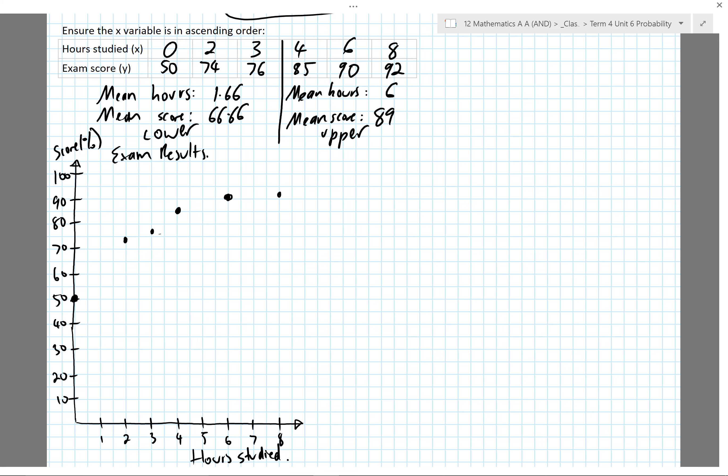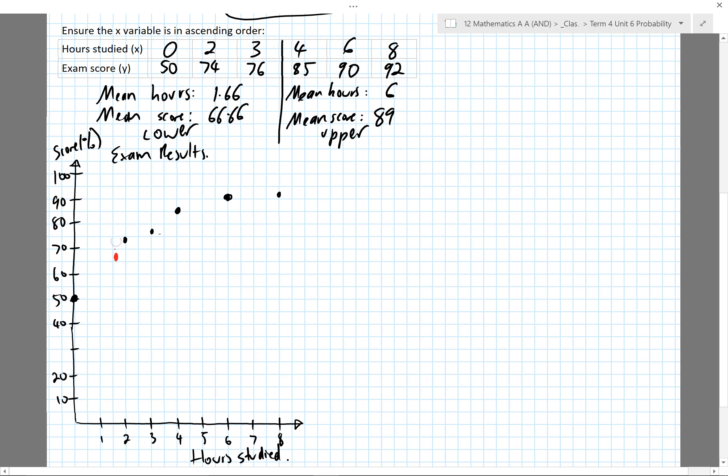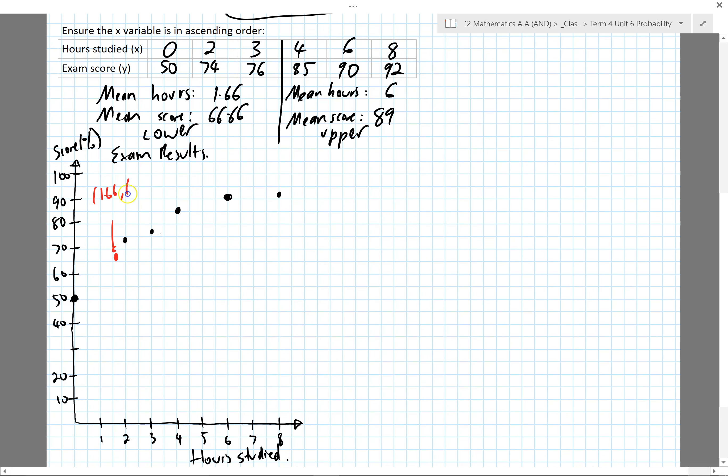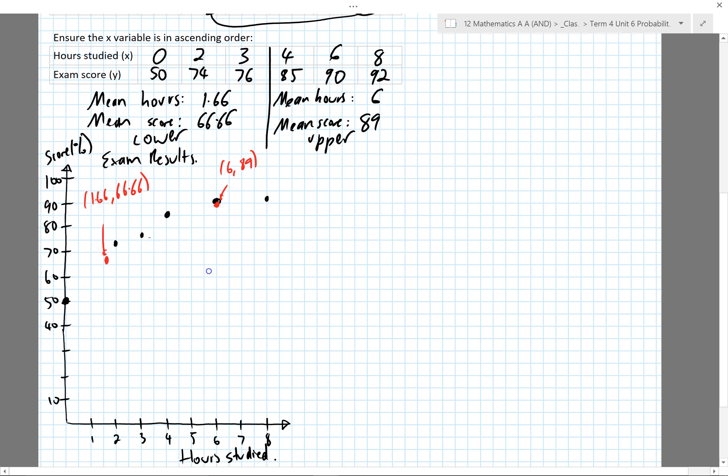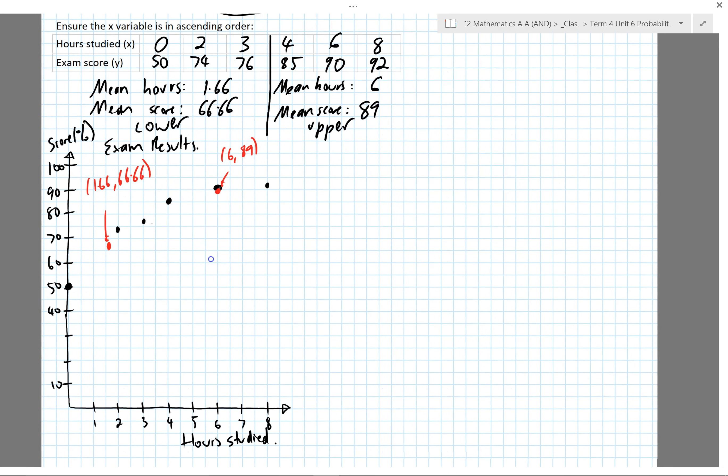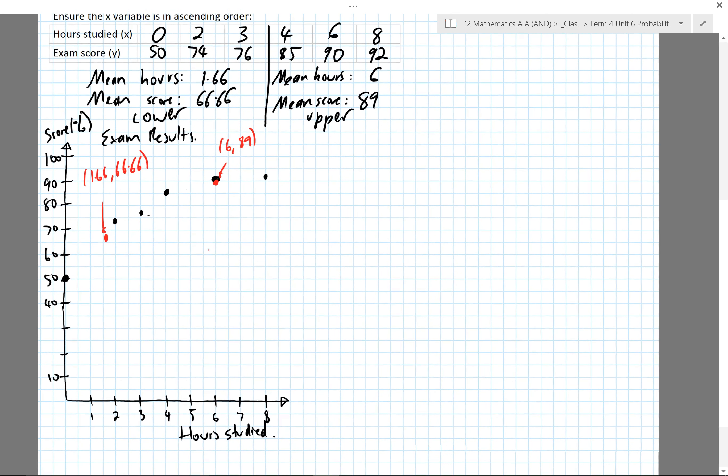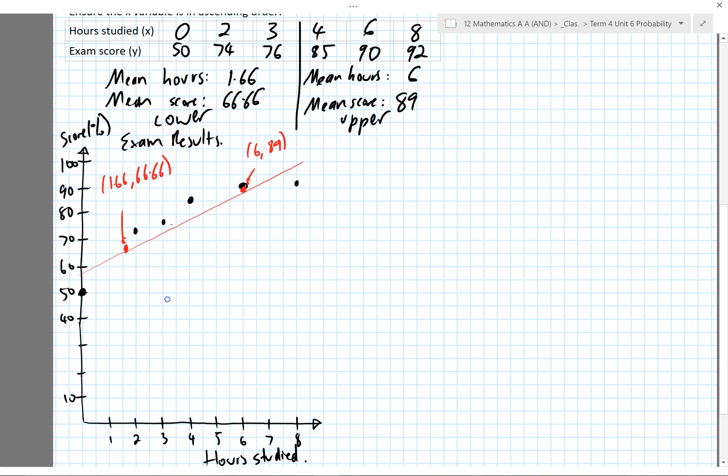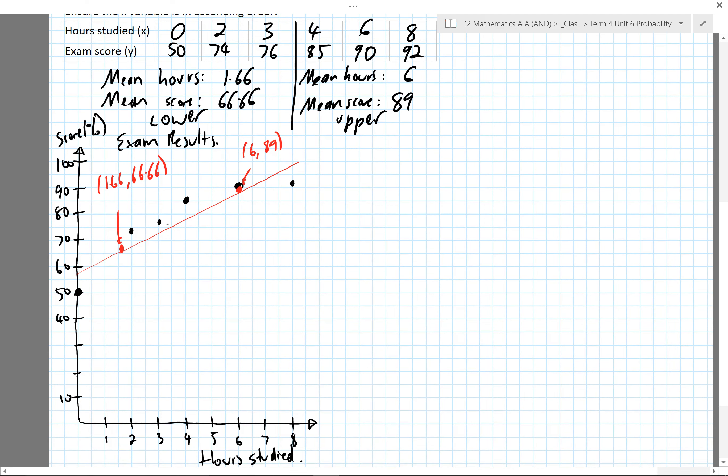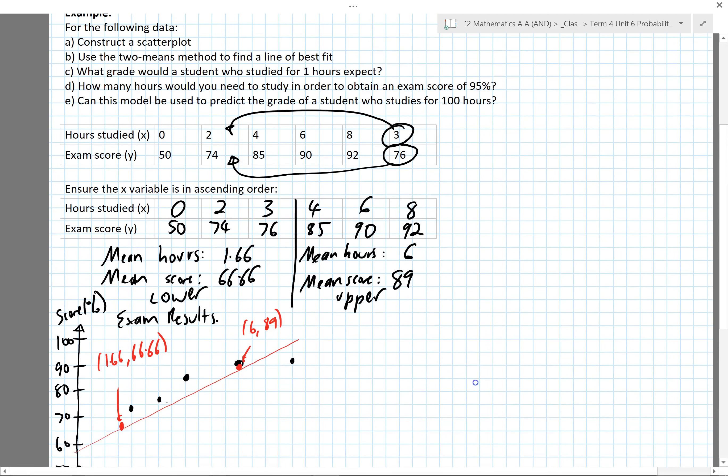I'll now plot the lower and upper means on here. The lower mean is 1.66 and 66, so about here. The upper mean is 6 and 89. Between those two points is where I'll draw my line of best fit, and there's absolutely no guesswork at all because there's just two points to draw between. You'll be able to do it better with a ruler.